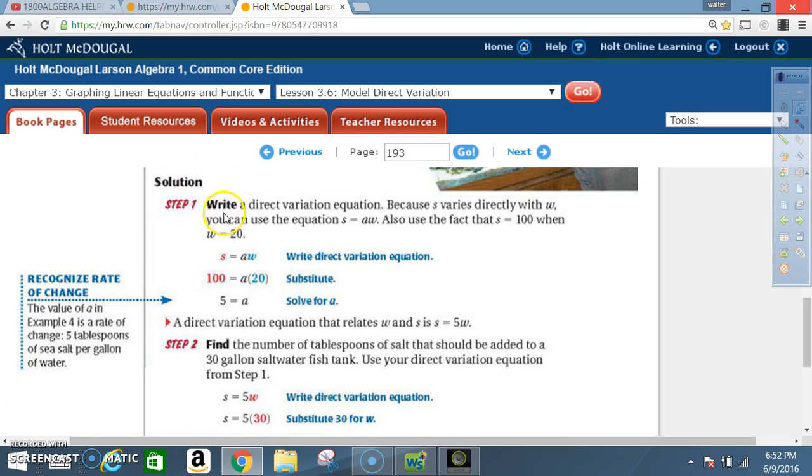Solution. Step 1. Write a direct variation equation. Because S varies directly with W, you can use the equation S equals A times W. Also, use the fact that S equals 100 when W equals 20. Write a direct variation equation. S equals A times W. Substitute. S is 100. W is 20. Solve for A. After solving for A, you end up with A equals 5.